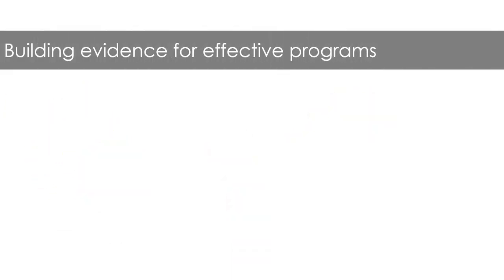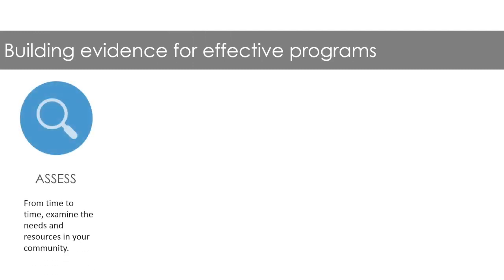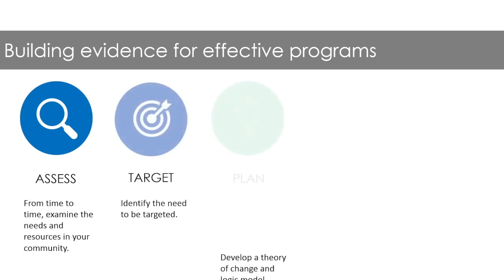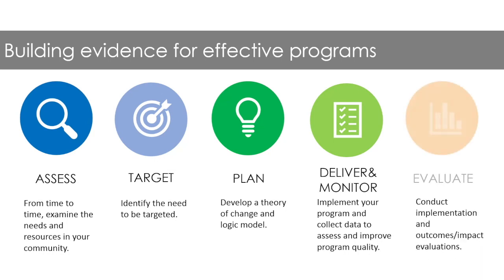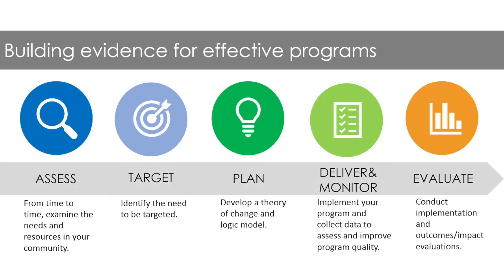Before we learn about Step 3, let's review the entire process of building effective programs for youth. The basic idea is that you'll want to assess the needs and resources in your community, identify the needs to be targeted, create a plan, and then implement your plan to deliver your program and monitor its quality. Once your program is running smoothly, you might want to take that final step of conducting an evaluation. While we present the steps as a linear process, it may not work that way for you. Because this is a journey of learning about your program, it's normal to revisit an earlier step from time to time.